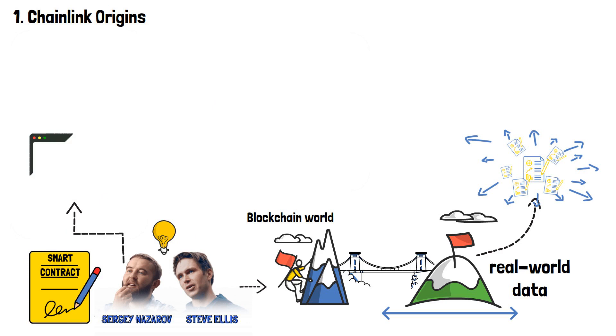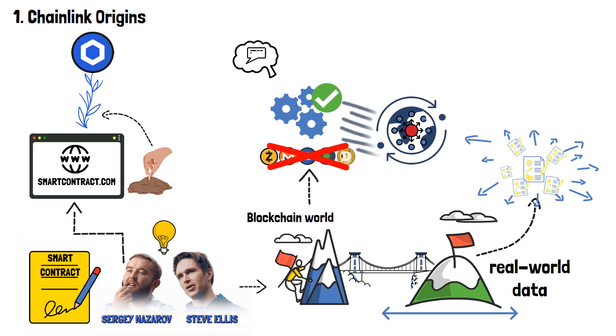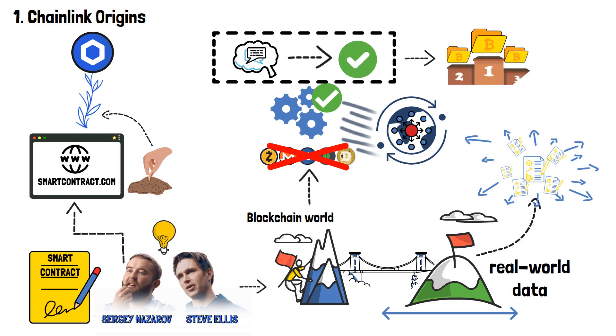Together, they founded smartcontract.com, the seed from which, eventually, chainlink sprouted. Their venture wasn't just about building another cryptocurrency, it was about solving a crucial problem that had been casting a shadow over the world of decentralized applications. As it's usually the case, articulating a real-world problem and offering a solution is the secret behind every successful project.